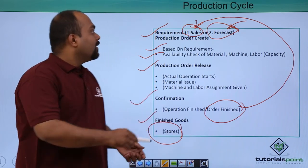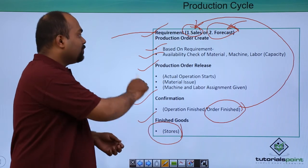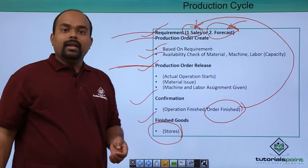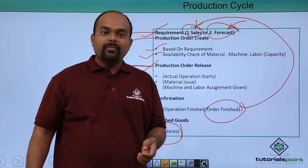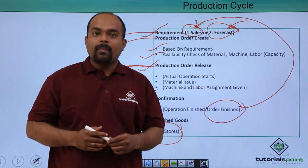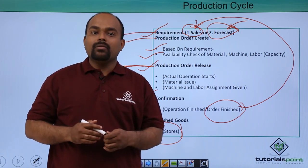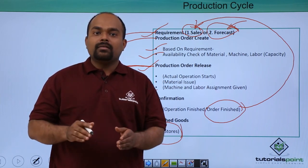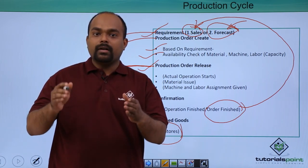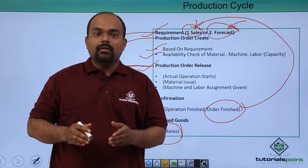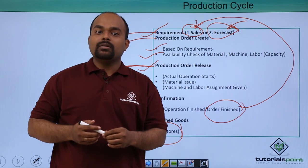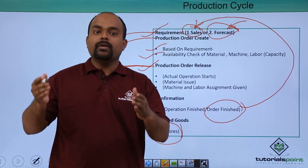Like this, there are five steps in the production cycle: requirement — with two types, sales and forecasting; production order create — based on requirement, with availability check of material, machine, and labor, and capacity checking; production order release — actual operation starts, material issued, machine and labor assignment given; confirmation — operation finished and order fulfilled; and finally finished goods go towards the stores. This is how the production cycle runs in SAP PP.